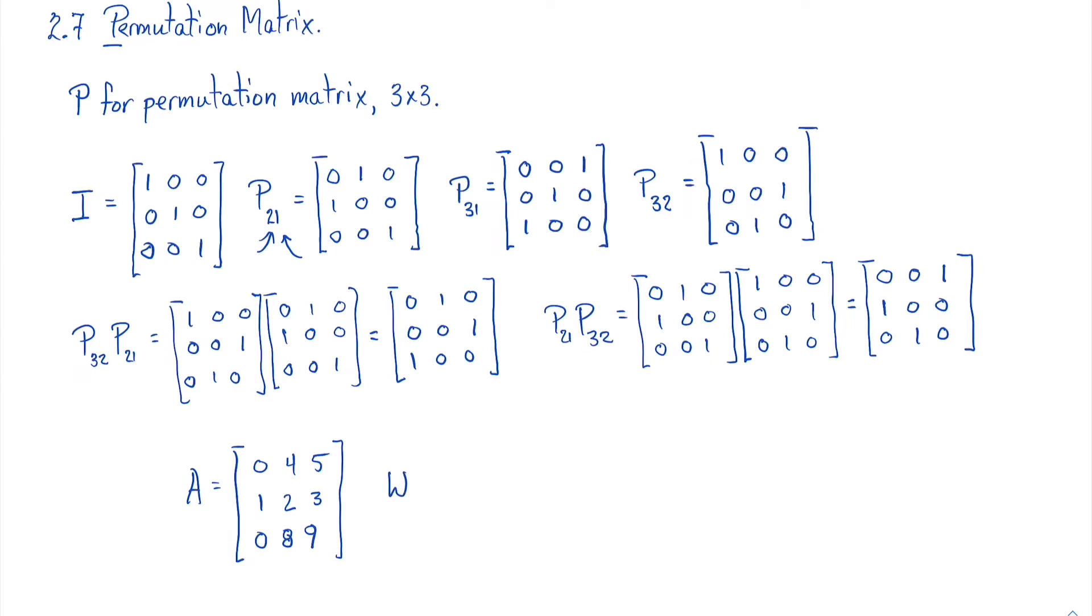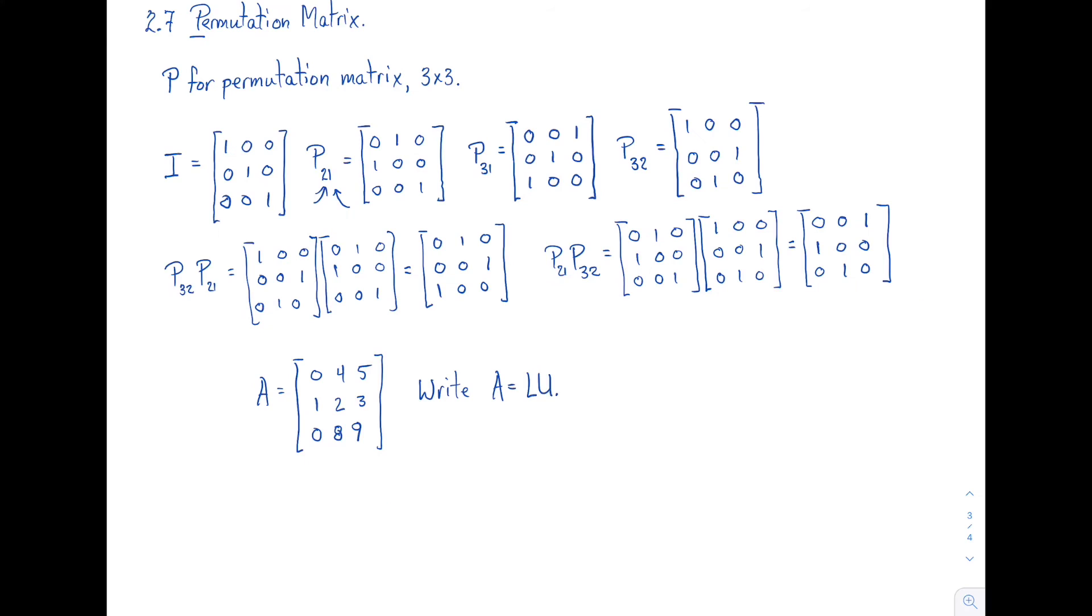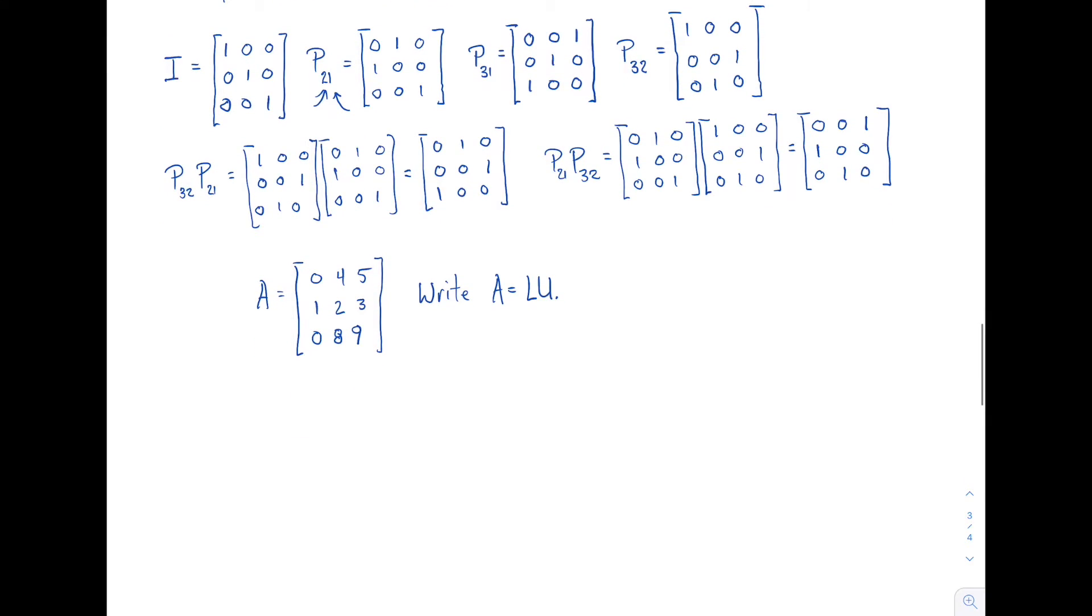Now, if I asked you to write A equals L, U, right off the bat, we have a problem. And the problem is that the pivot is in the wrong spot. Ideally, the pivot at the second row would be into the first row. So let's do that. How can we do that using matrices? Well, we need to switch the first and second row. So I'm going to multiply A by P_21, times A. So what's that going to give me? That's going to give me 1, 2, 3, 0, 4, 5, 0, 8, 9. And there we have it.